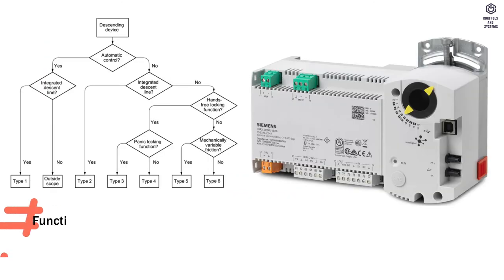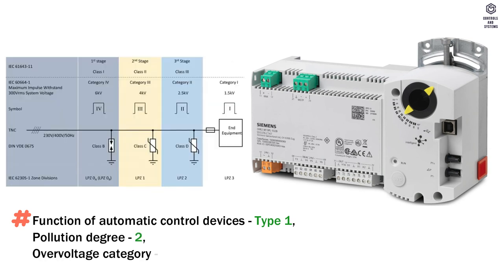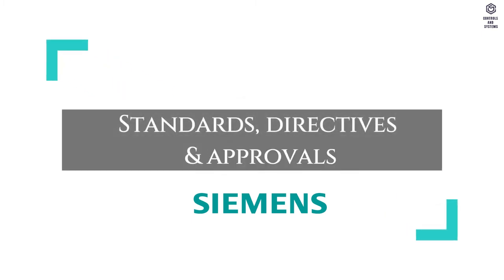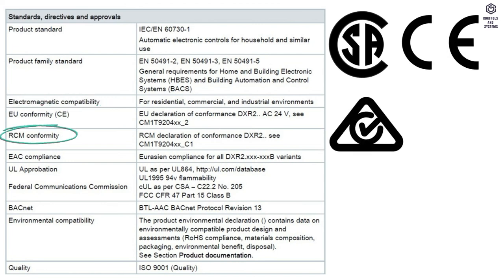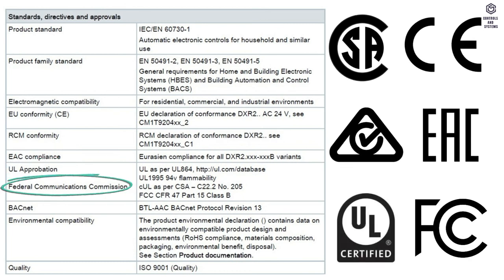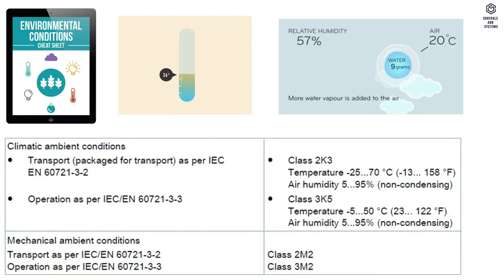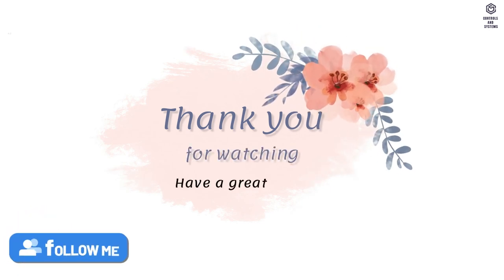Protection classification: function of automatic control devices is type 1, pollution degree is 2, overvoltage category is 3. Design type is device suited for use with equipment of safety classes 1 and 2. Standards, directives, and approvals include electromagnetic compatibility, EU conformity, RCM conformity, EAC compliance, UL approbation, FCC, BACnet, and ISO 9001 quality. The climatic and mechanical ambient conditions are shown in the table. I hope this video is useful to you. Thank you for watching — have a great day.